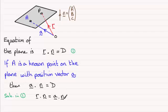You could take this term from both sides and pull out n as a common factor. If you do that, you're going to get r minus a dotted with the vector n equals 0. That's just rearranging this equation here.